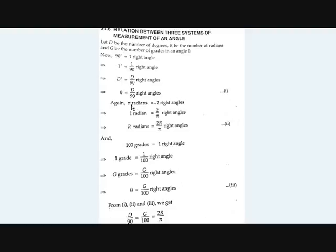Now if we take radians, pi radians is equal to 2 right angles. That means 1 radian is 2 by pi right angles, and R radians are 2R by pi right angles. So theta is equal to 2R by pi.